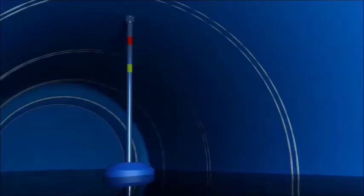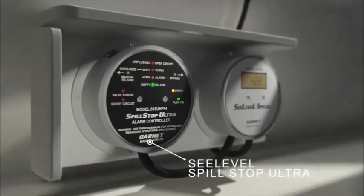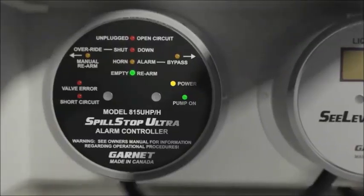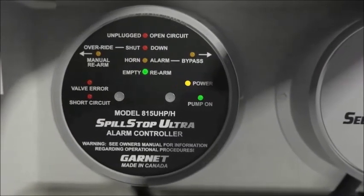Garnet C-level gauges can also regulate the filling process. The 815 UHP Spill Stop Ultra works in conjunction with the sea-level gauge to prevent overfill and damage during the loading process.